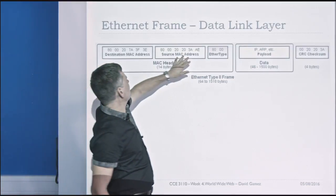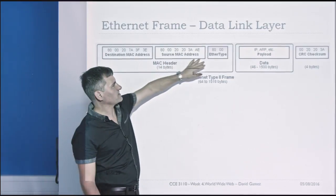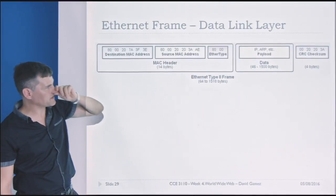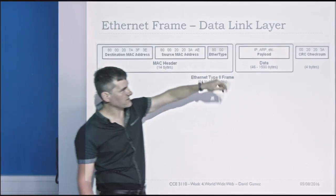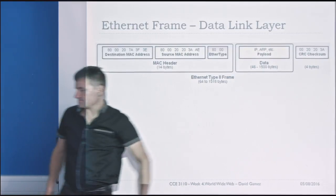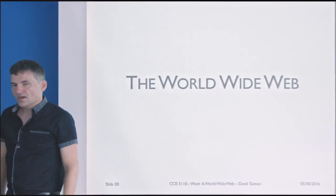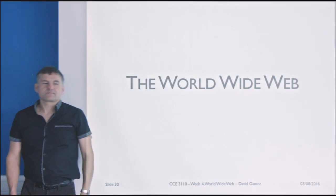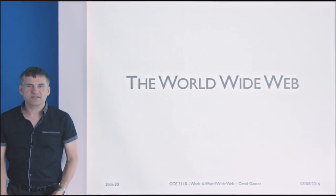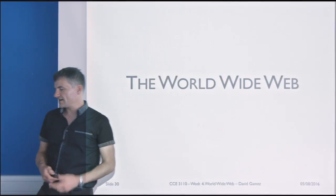The data link header has the destination MAC address, source MAC address, ether type, a checksum to make sure the data isn't corrupt, and then the actual data. So that's a potted version of the Internet and some of the protocols that work at the Internet level. Now I can talk about the World Wide Web and how that functions.